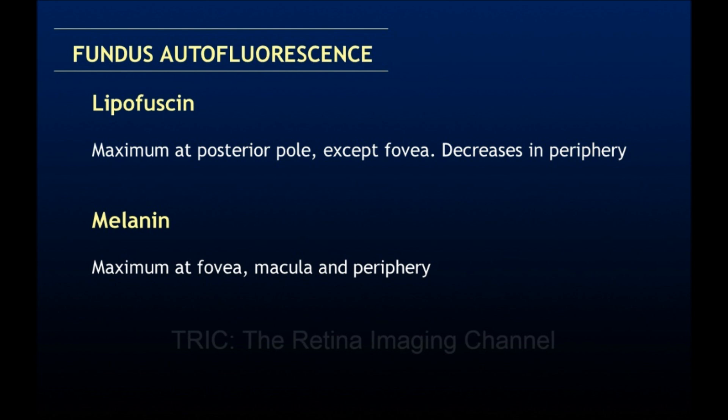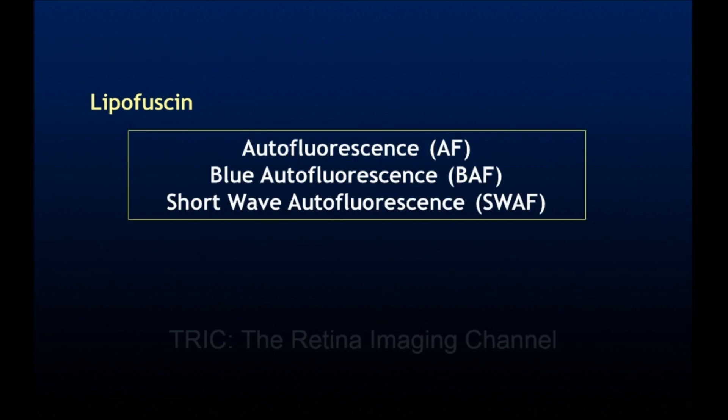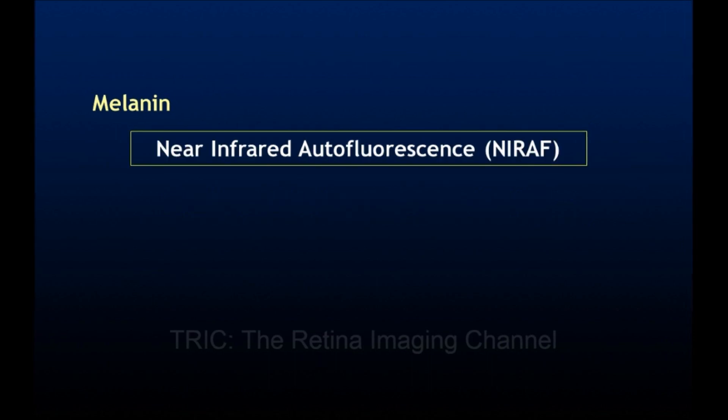Lipofuscin is present in the posterior pole and decreases toward the periphery, and it is absent in the fovea. Melanin is present at the macula and periphery, with its maximum concentration at the fovea. When we refer to autofluorescence, blue autofluorescence, or short-wave autofluorescence, we are talking about lipofuscin-based autofluorescence. The term near-infrared autofluorescence is used for melanin-based autofluorescence.